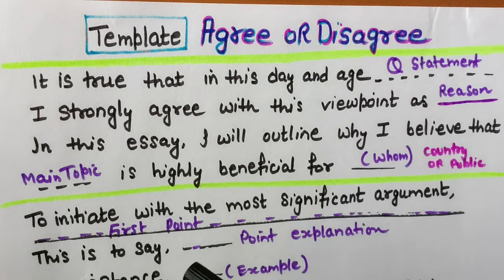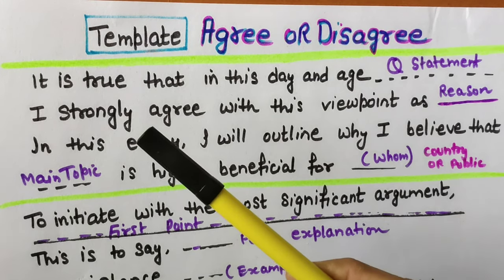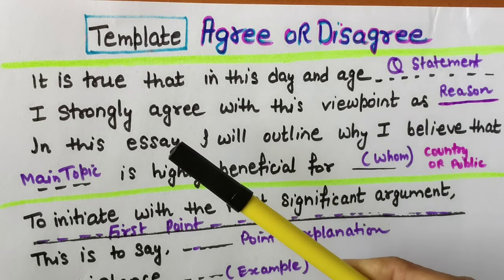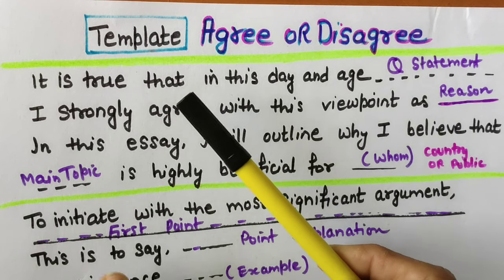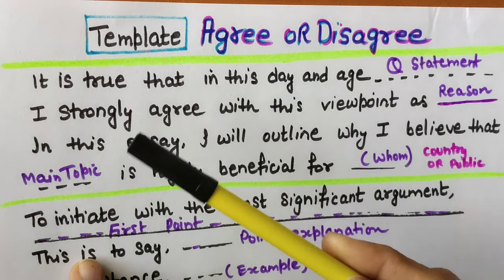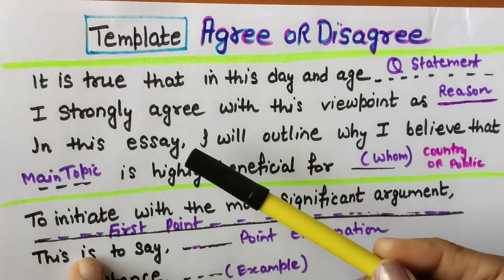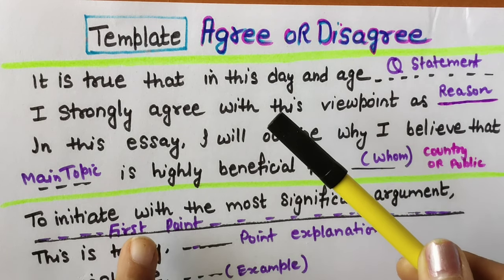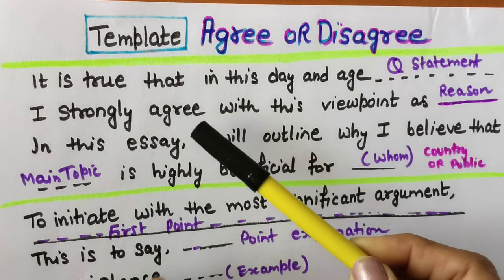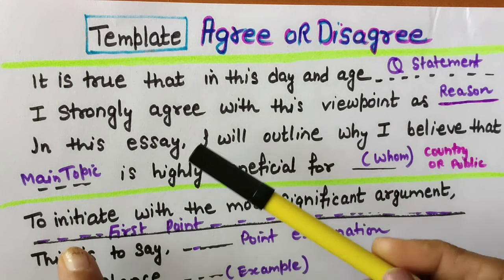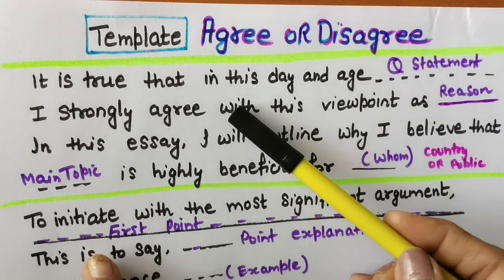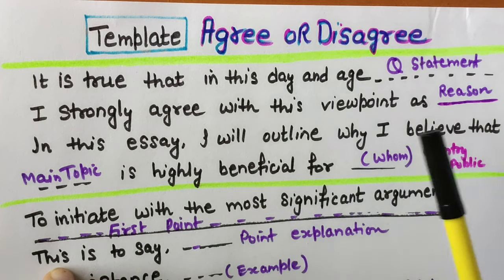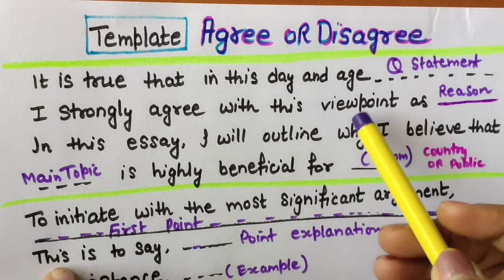Hello everyone, I am Monica from IELTS 9. 50-60% of your IELTS writing task 2 problems I have solved. Please follow this template and definitely you will get good bands. But one more thing is important here while using templates: please take care that each and every word should be in the correct sequence.